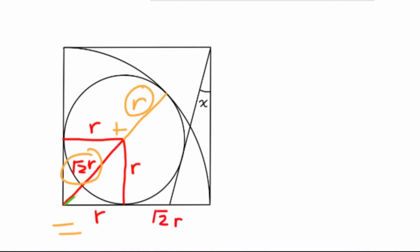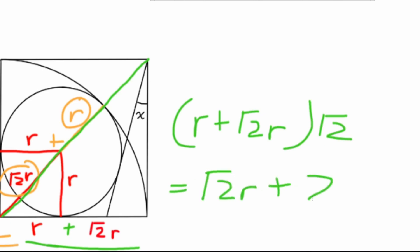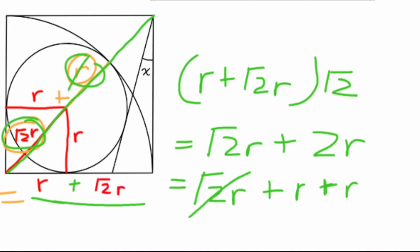Then we can solve for the hypotenuse of the square. Since the ratio between the side and the hypotenuse is 1 to root 2, we can multiply r plus r root 2 by root 2, which equals r root 2 plus 2r. Then we can see that the section beyond the circle is r.